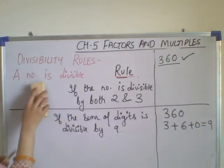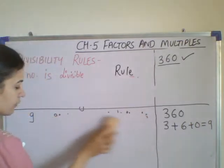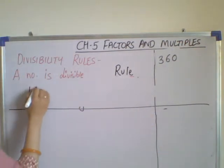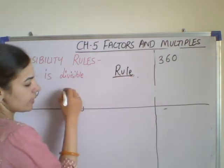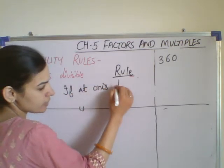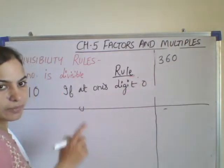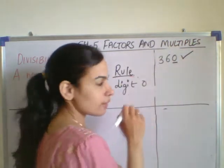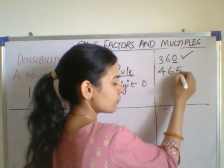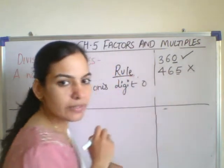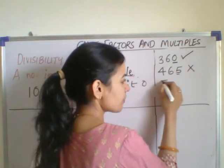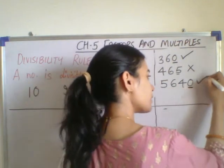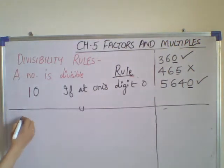The next is divisibility by 10. The rule is: if at the one's digit 0 is there, then the given number will be divisible by 10. Let us take 465 — at the one's place 0 is not there, so this number will not be divisible by 10. Similarly, 565 does not have 0 at the one's place, so it is also not divisible by 10.